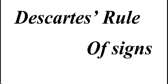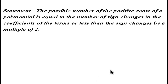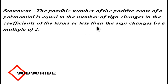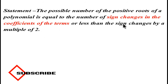Today we are going to discuss Descartes' Rule of Signs. First of all, read its statement: the possible number of positive roots of a polynomial is equal to the number of sign changes in the coefficients of the terms, or less than the sign changes by a multiple of two. We will understand it with the help of a polynomial.